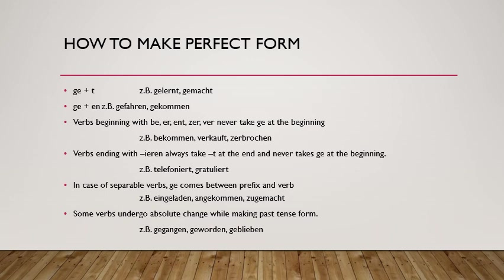Some verbs undergo an absolute change when forming the past participle — those you have to learn by heart. For example: 'gehen' → 'gegangen', 'werden' → 'geworden', 'bleiben' → 'geblieben'. By practice, you will start understanding where to use 'ge' and where not to use it.